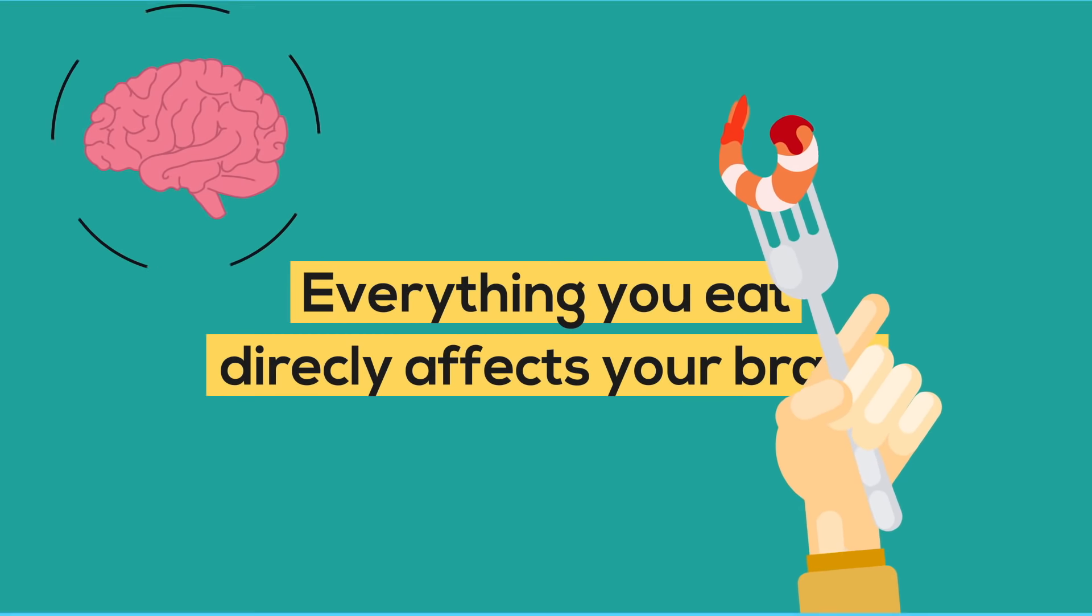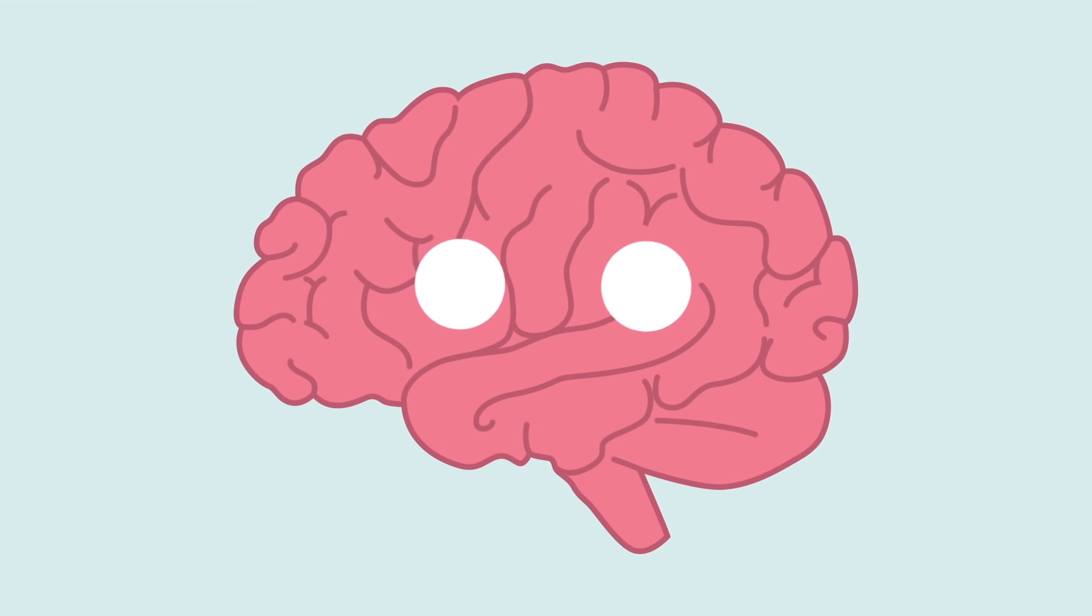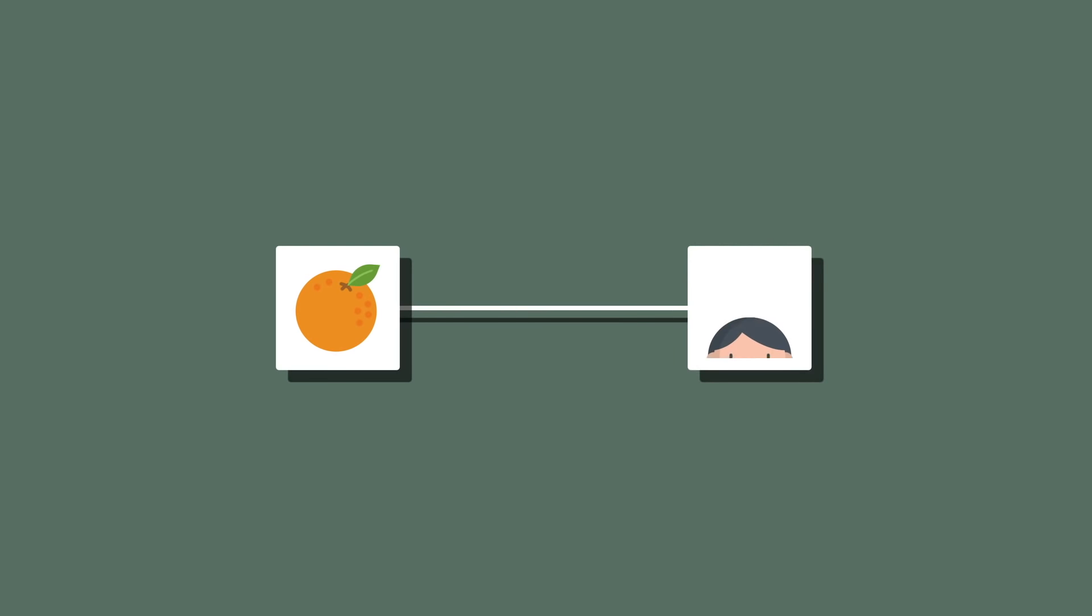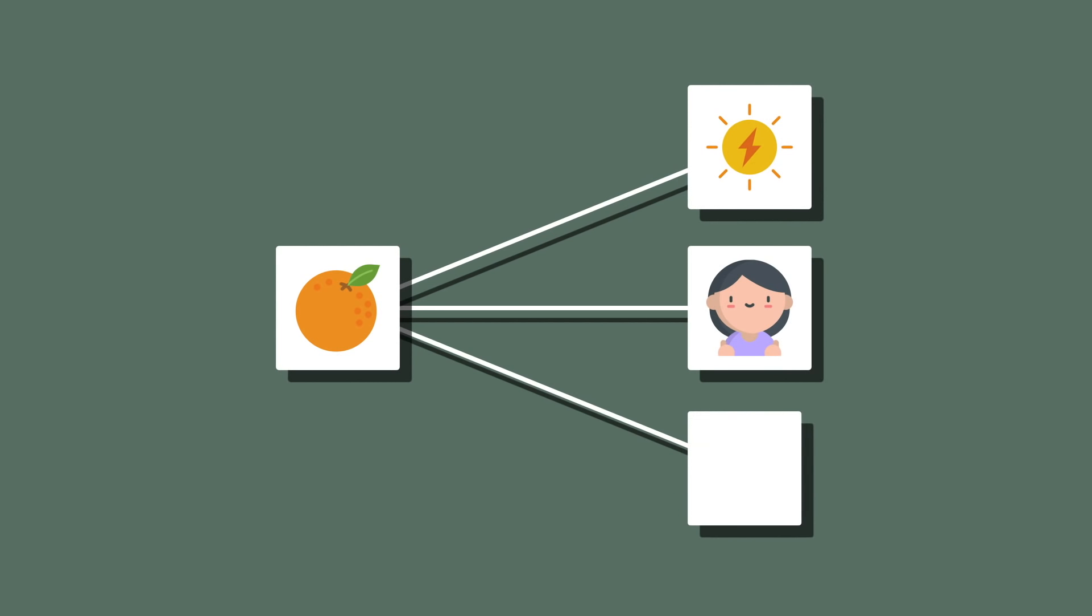Let's start by emphasizing the point that everything you eat directly affects your brain. It stimulates your brain cells to produce hormones such as dopamine, serotonin, or norepinephrine. In other words, the food you eat can change your mood, energy, or even memory.